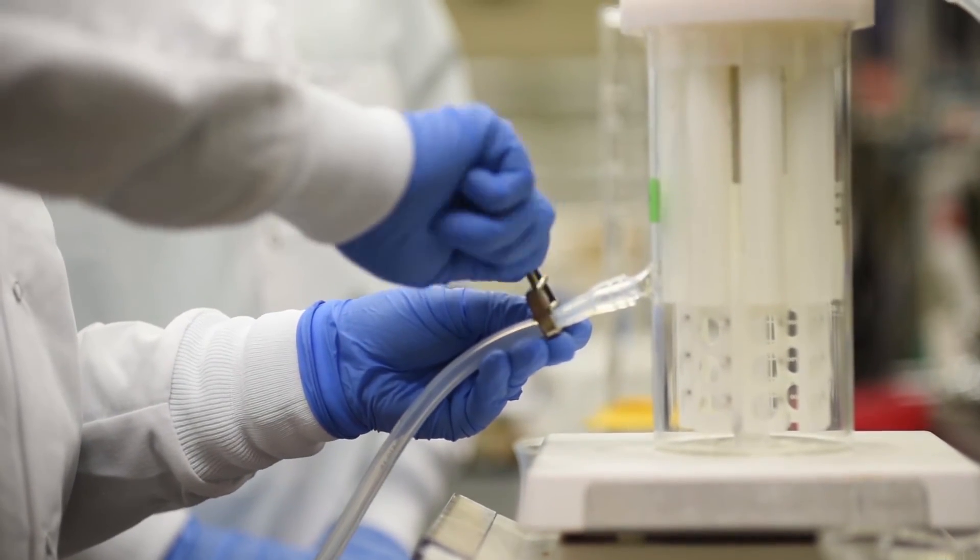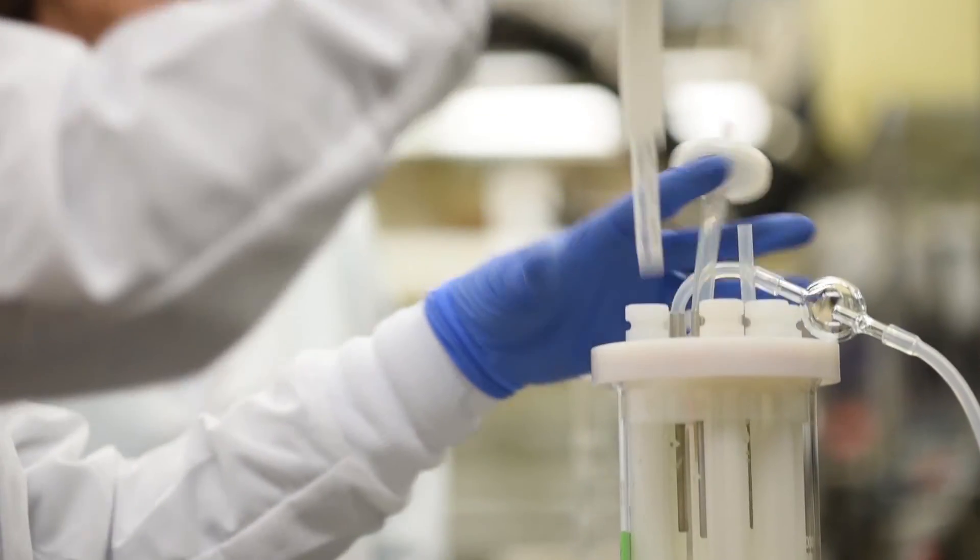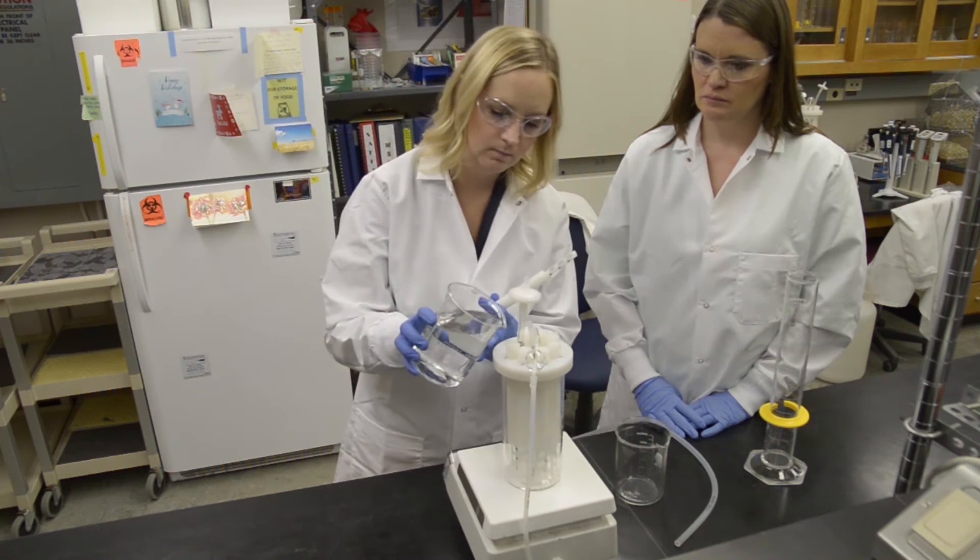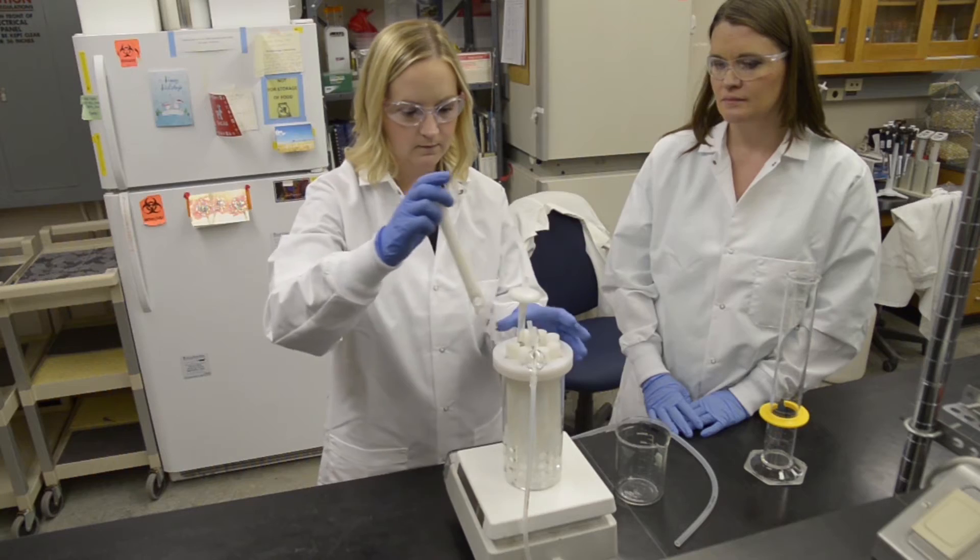With reactor assembled, coupons in place and rods aligned in notches, remove a rod and add water to the reactor until it is above the effluent spout. Replace the rod.